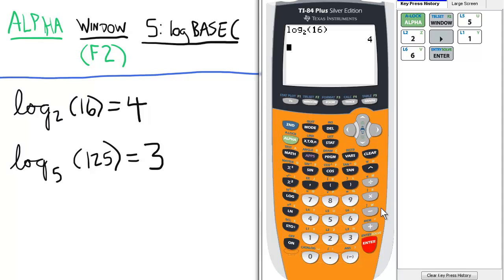We will repeat the procedure for log base 5, 125. So first we press alpha, and then window, which is actually going to be the F2 since we're in alpha mode. And then we select 5, which is the log base.